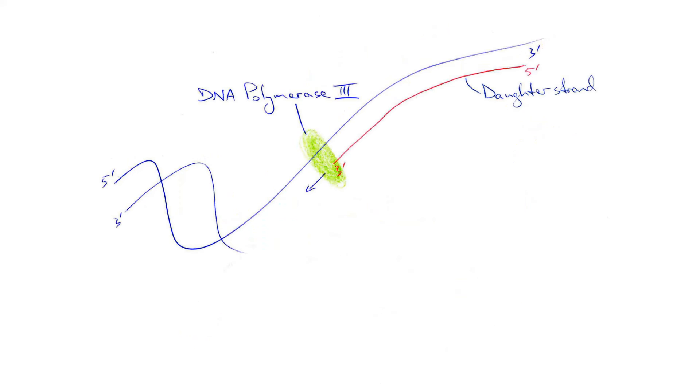The enzyme DNA polymerase 3 moves along the parent strand adding nucleotides in the complementary fashion to generate a matching strand of DNA, the daughter strand.